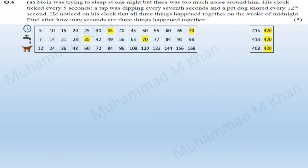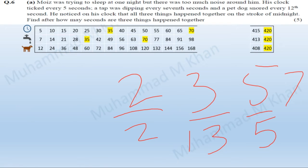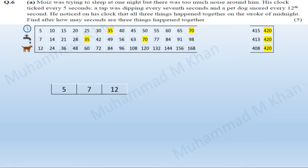The most well-known methodology used to solve questions involving the least common multiple is calculating LCM by the prime factorization method. We divide all of the given numbers by prime numbers. A prime number is a number that is divisible by itself and one only — 2, 3, 5, 7, and so on. We have to list all three numbers: 5, 7, and 12.